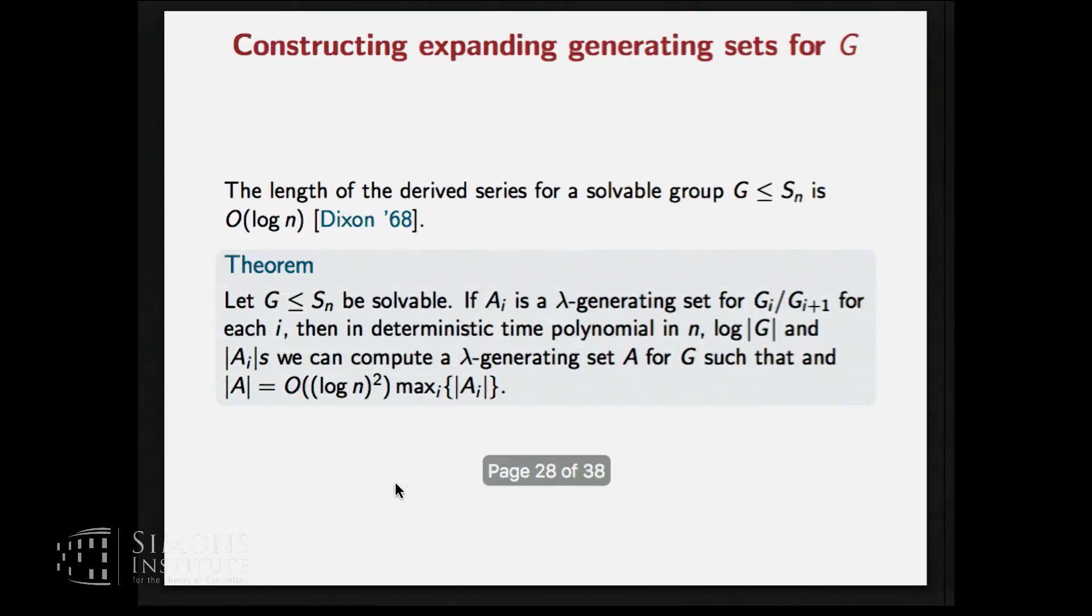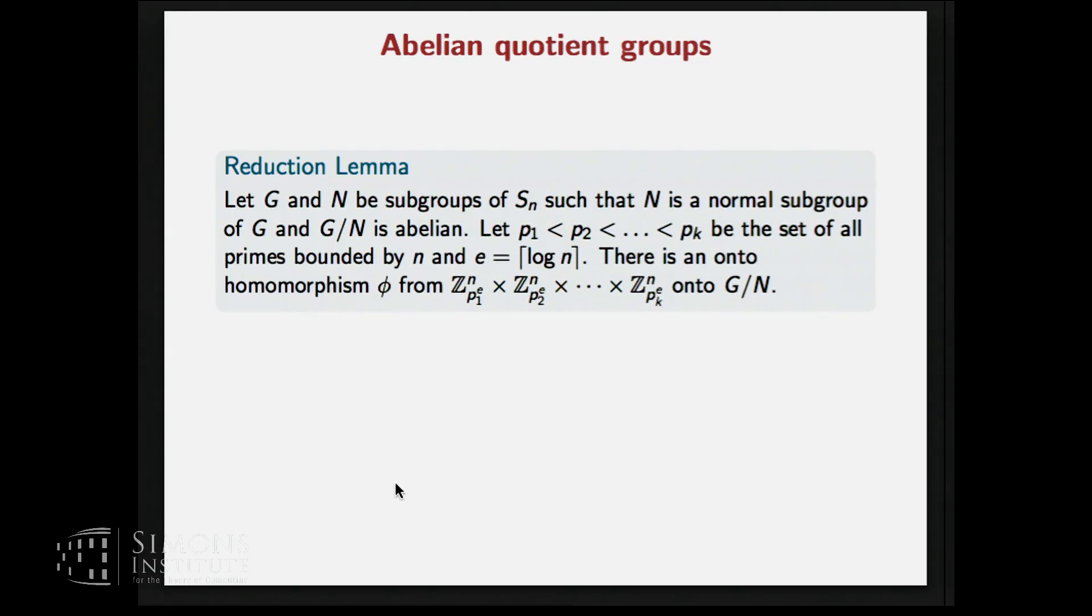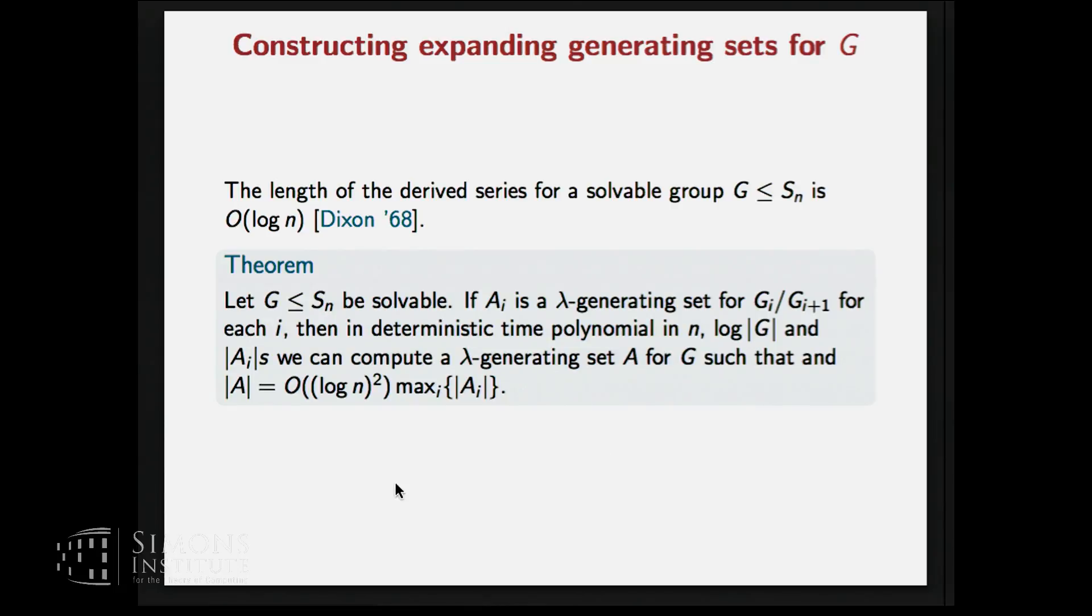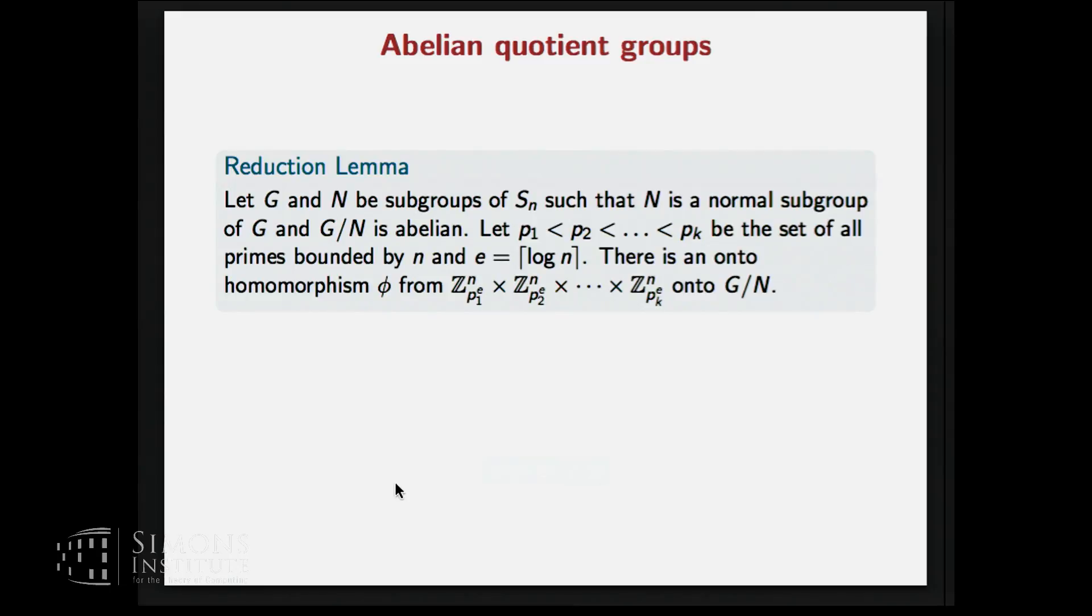So first of all, this is good because the length of the derived series is just logarithmic in n. Note that the size of the group itself could be as large as n factorial. So still this series is quite short. And in fact, this leads us to an expanding generating set of this particular size. So now the only question we have to address is how to get expanding generating sets for the abelian quotient groups.